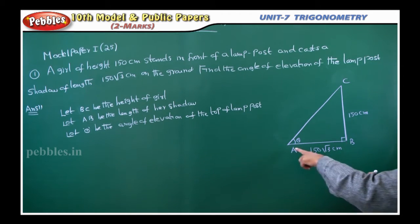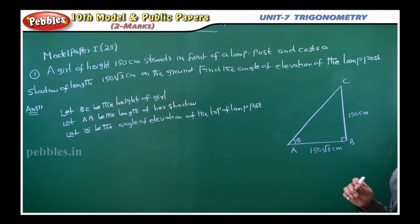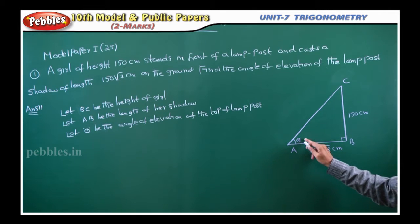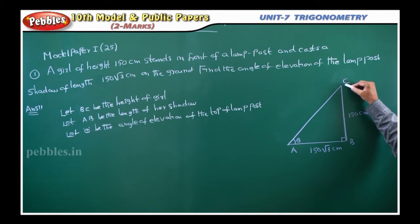That is, in this diagram, AB is the length of shadow of the girl. Now, what they are asking is this theta. What is the angle of elevation of the top of the lamp post?